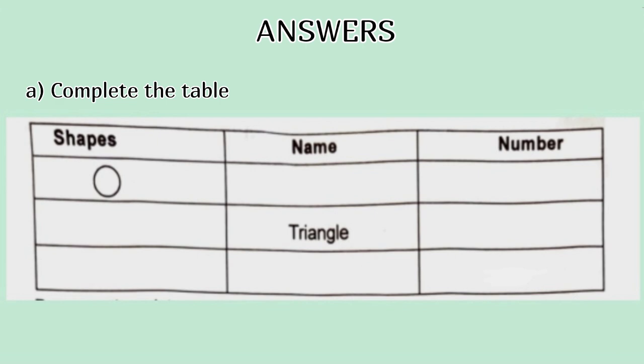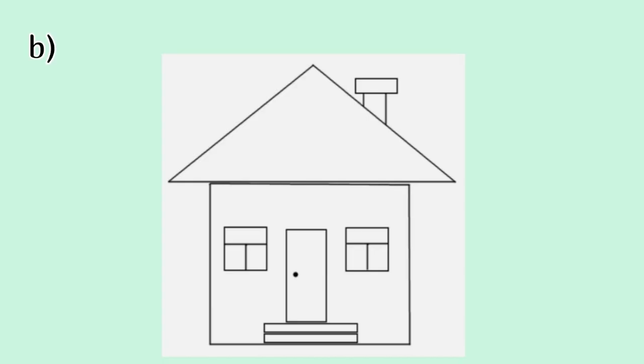Answers. Complete the table. Shapes, Name, Number. Circle 8, Triangle 10, Square 6. B. You can draw any figure using the different shapes.